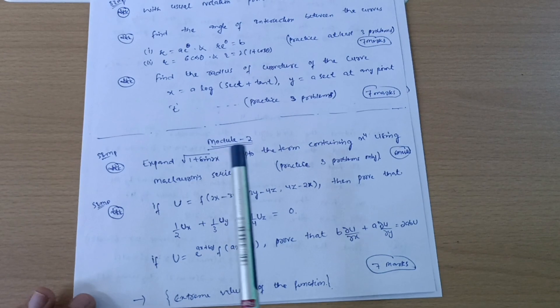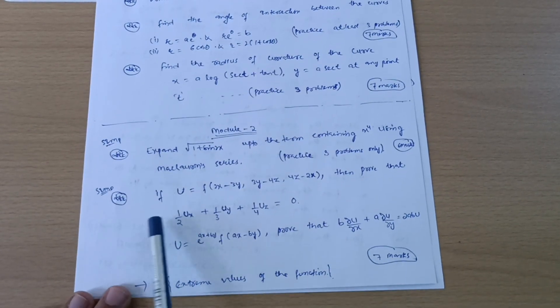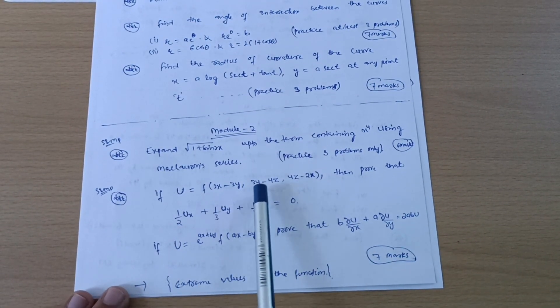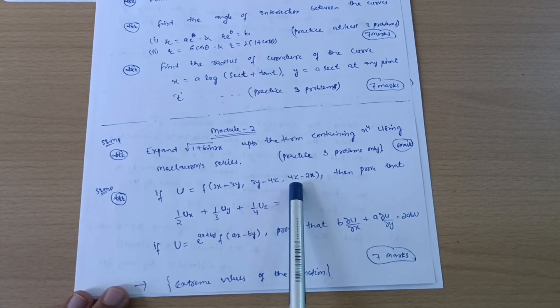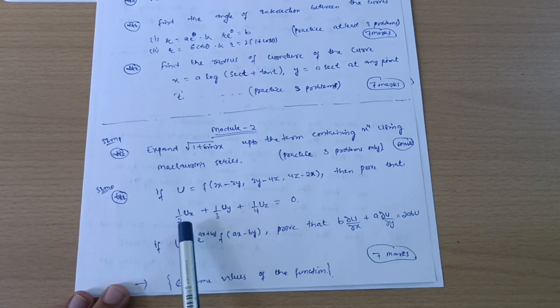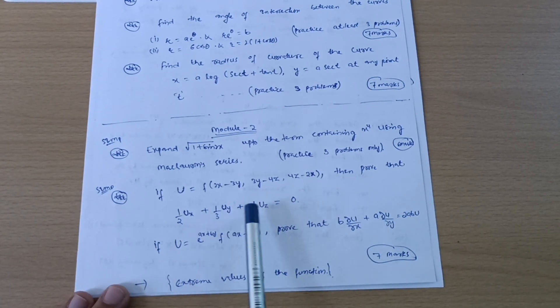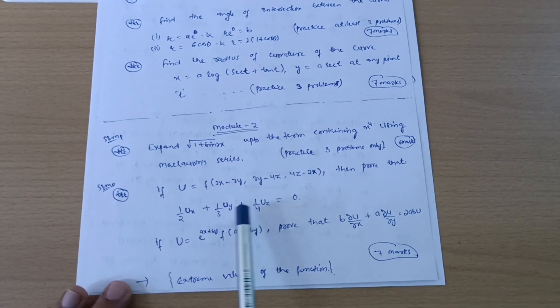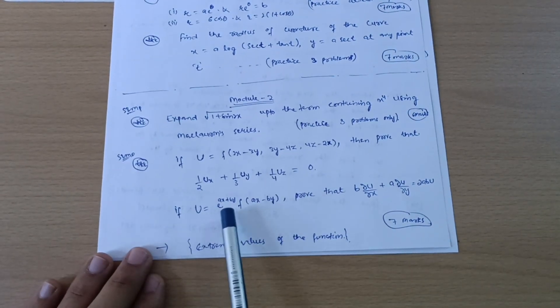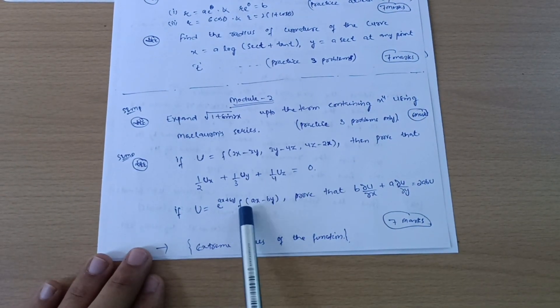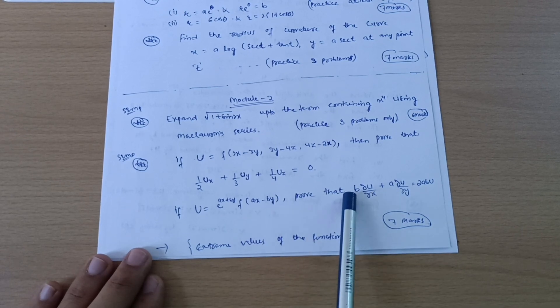Next is if u is equal to f of 2x minus 3y, 3y minus 4z, 4z minus 2x, then prove that 1 by 2 du/dx plus 1 by 3 du/dy plus 1 by 4 du/dz is equal to 0. This is the derivation. If u is equal to e power ax plus by f of ax minus by, prove that b du/dx plus a du/dy is equal to 2ab u.